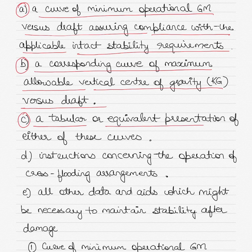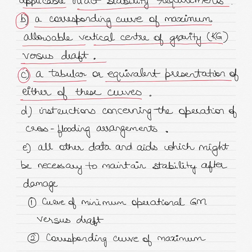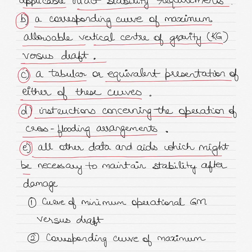The information also includes a tabular — that is, in the form of a table — or equivalent presentation, such as graphs or tables, of the above two curves mentioned in points A and B, represented in a form that is easy to interpret and follow. Then, number four: instructions concerning the operation of cross-flooding arrangements. Cross-flooding is when ingress of water in compartments starts to spread across compartments. Finally, all other data and aids which might be necessary to maintain stability after damage.